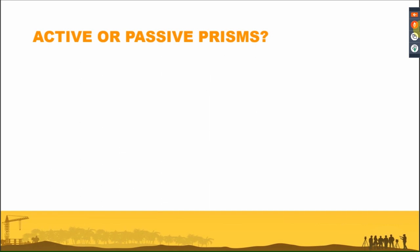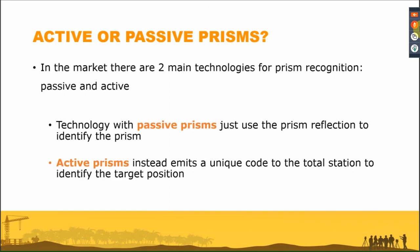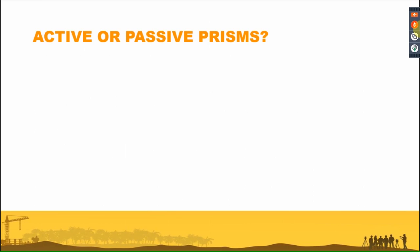Active vs. passive prism: in the market there are different brands doing robotic total stations, and in general we can divide the technology into two parts — those using an active prism and those using a passive prism. GeoMax, along with other Hexagon companies, uses the passive prism. A passive prism simply uses the prism reflector reflection to identify the prism. An active prism has a radio inside that emits a unique code to the total station to identify the correct prism.